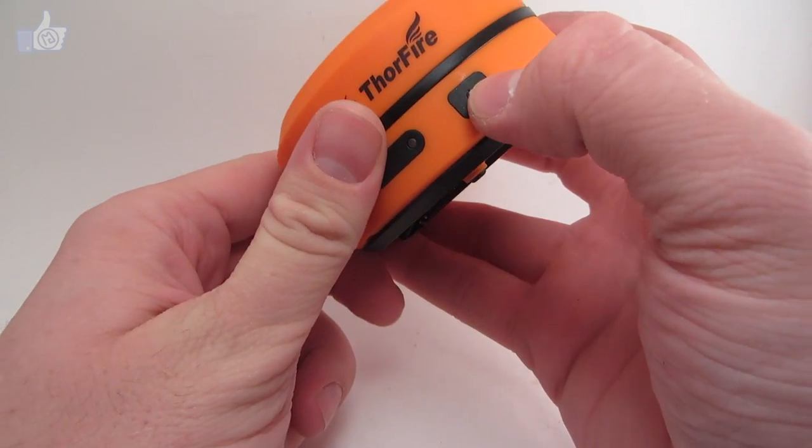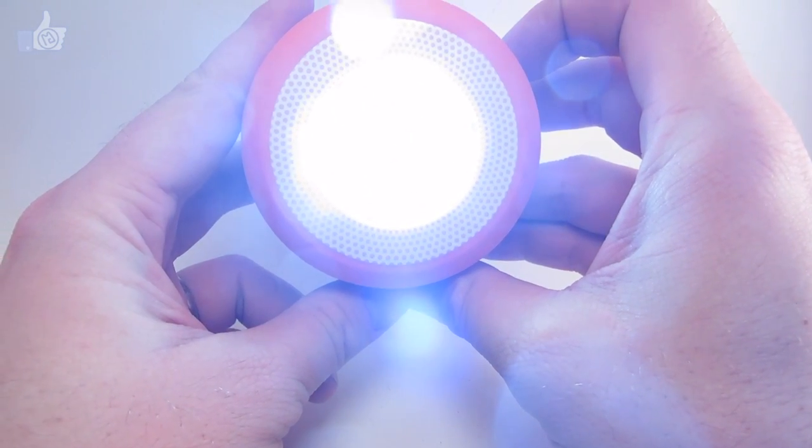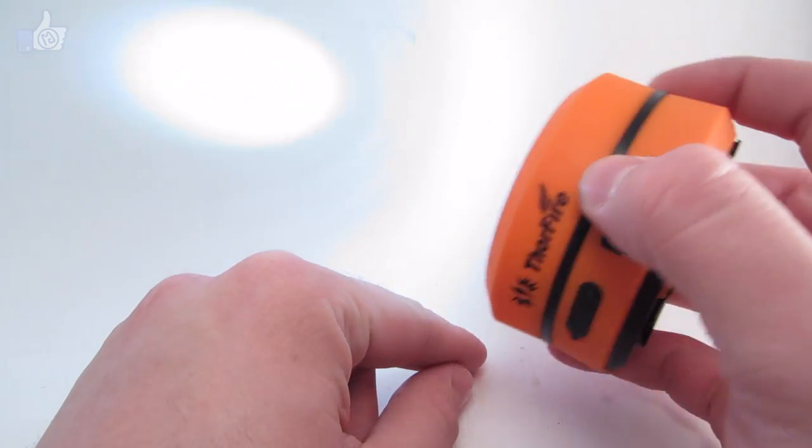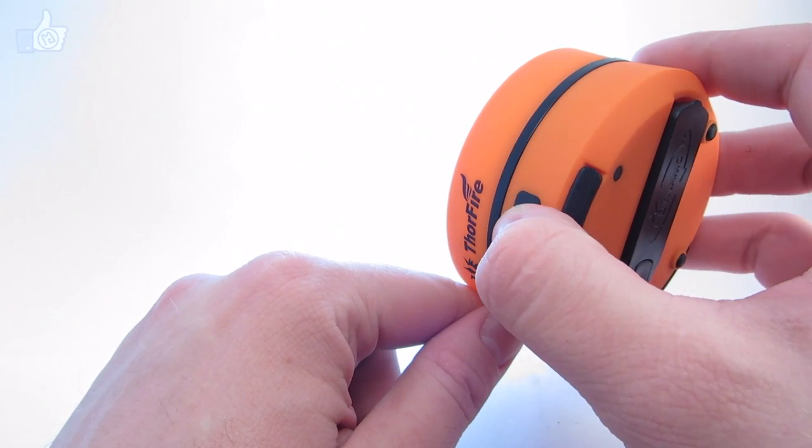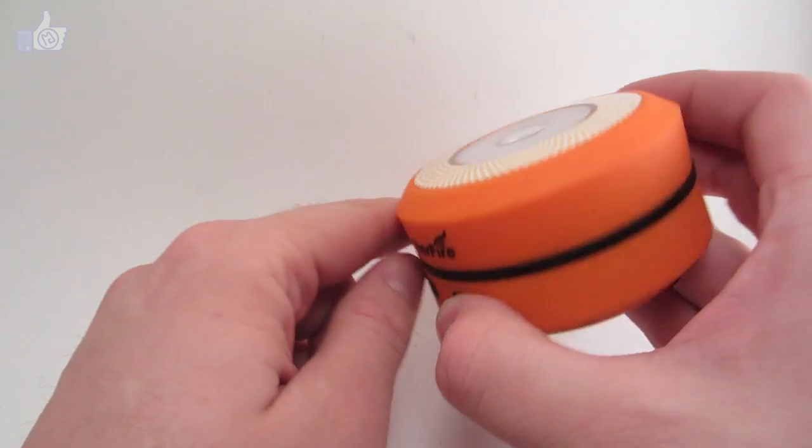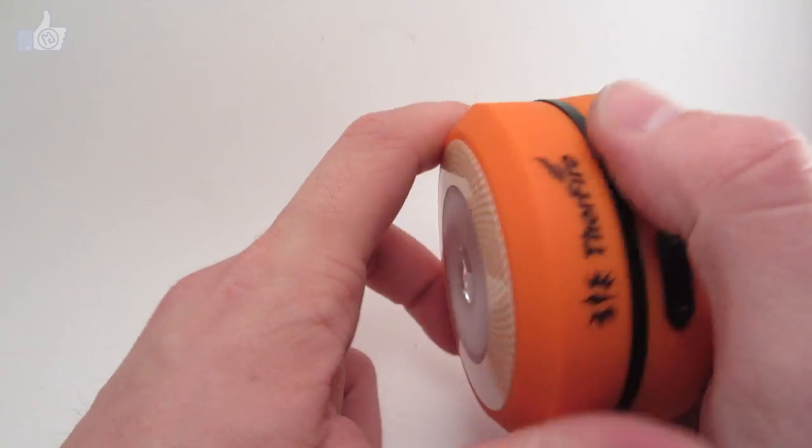To turn it on, you hit this button here. You can see, we've got light coming out of the top. It's pretty well focused. You'll see that better when you take it outside. You can hit it again and it goes up to its high mode. And then one more time and it goes off. So, we've got off, low, and high. And those are the only modes it has. It's very simple.